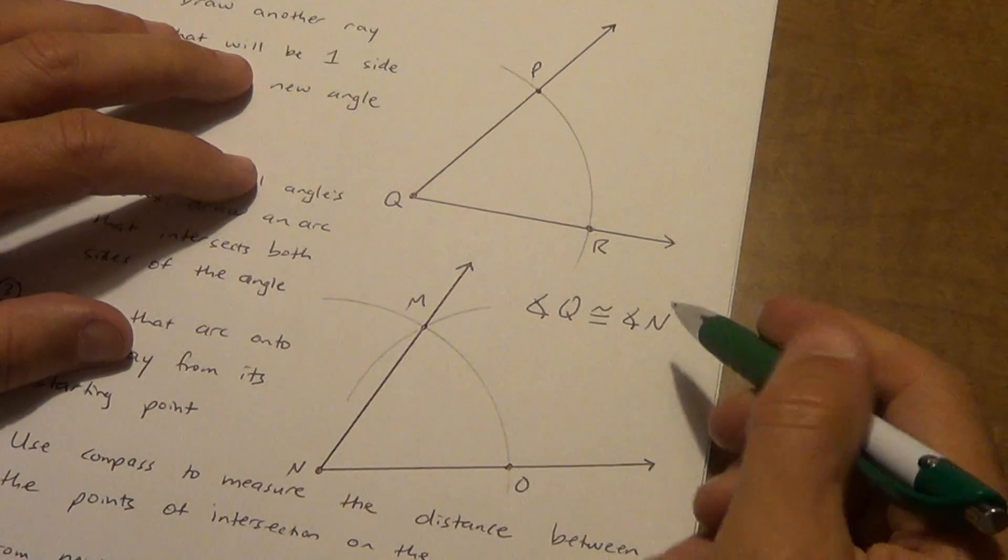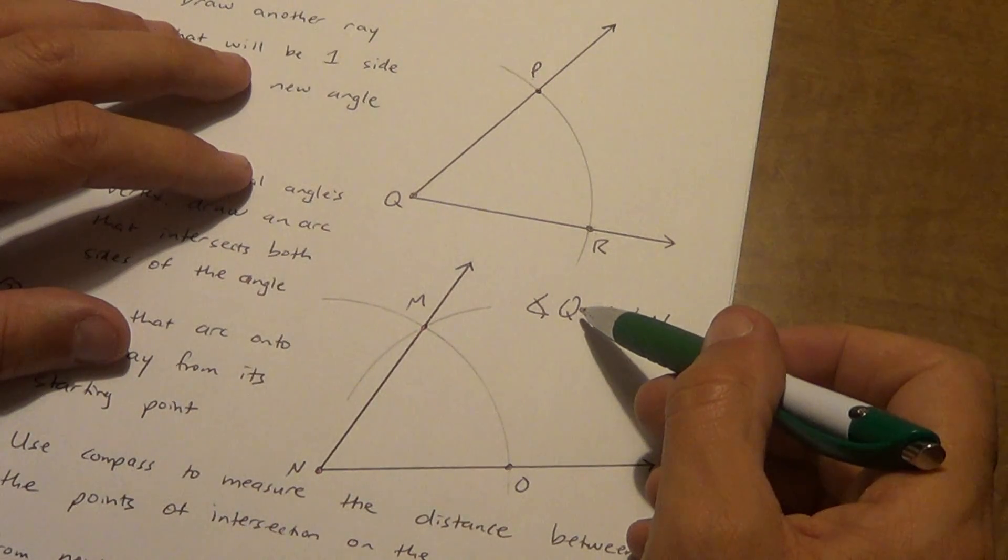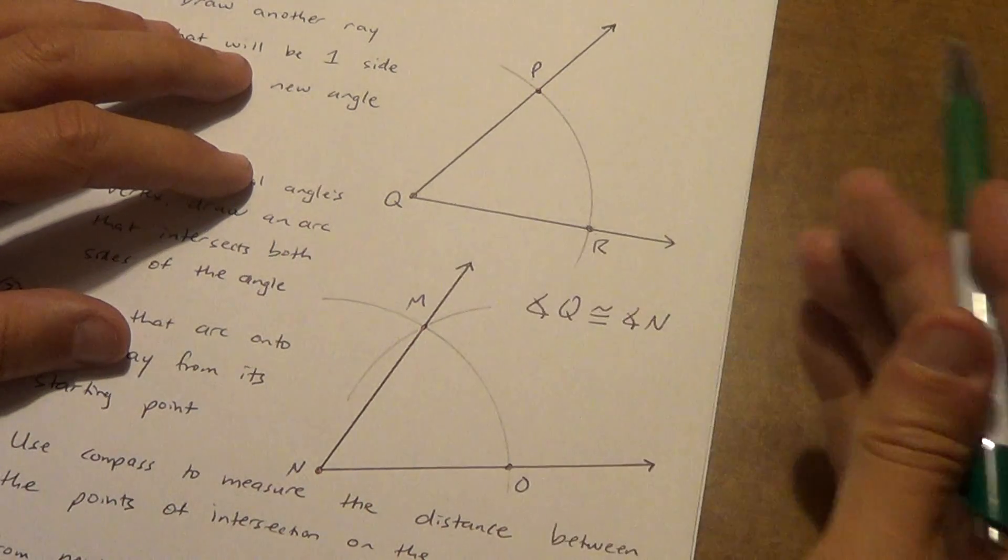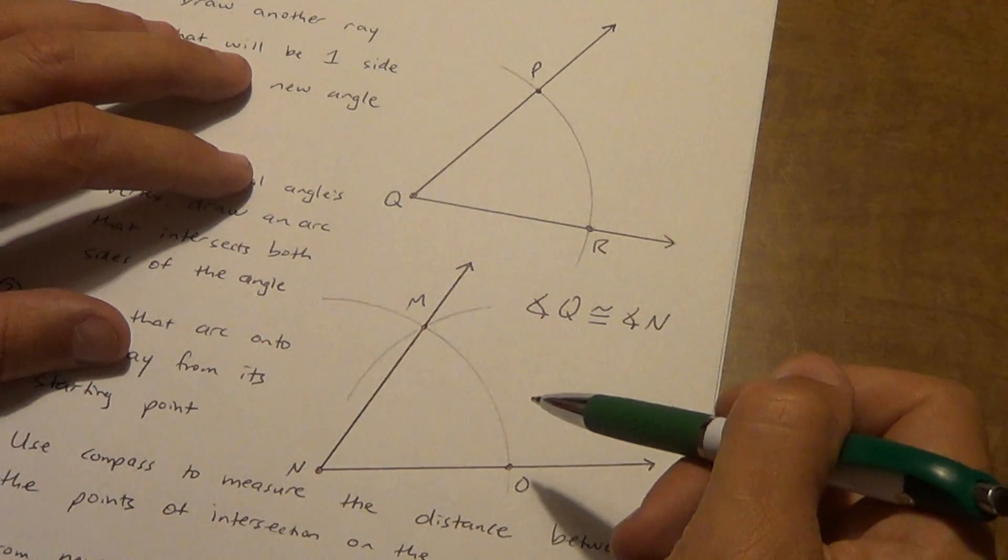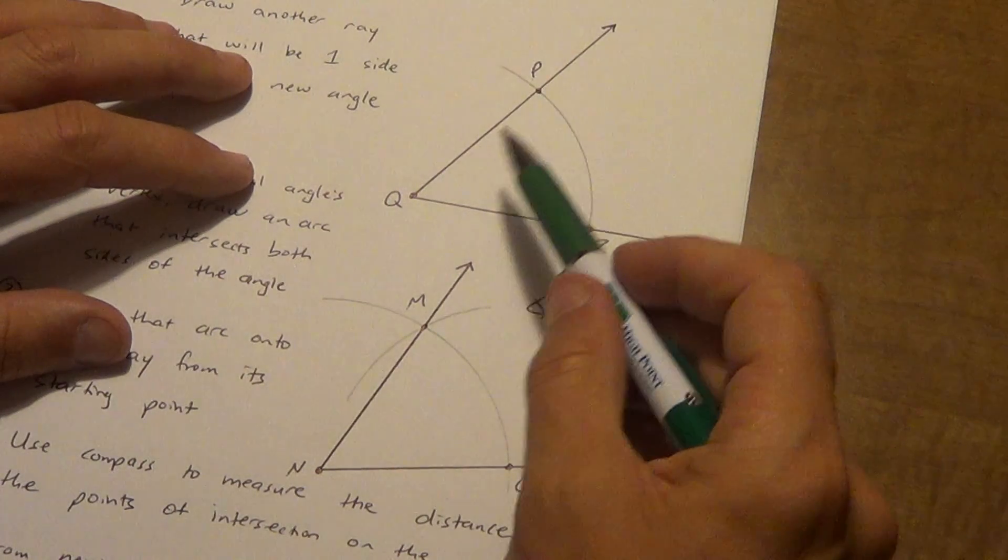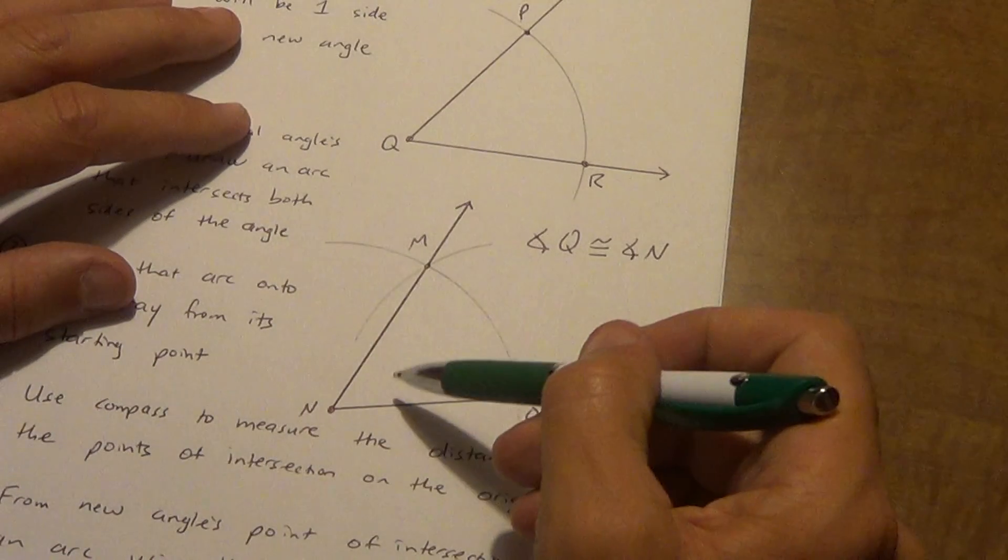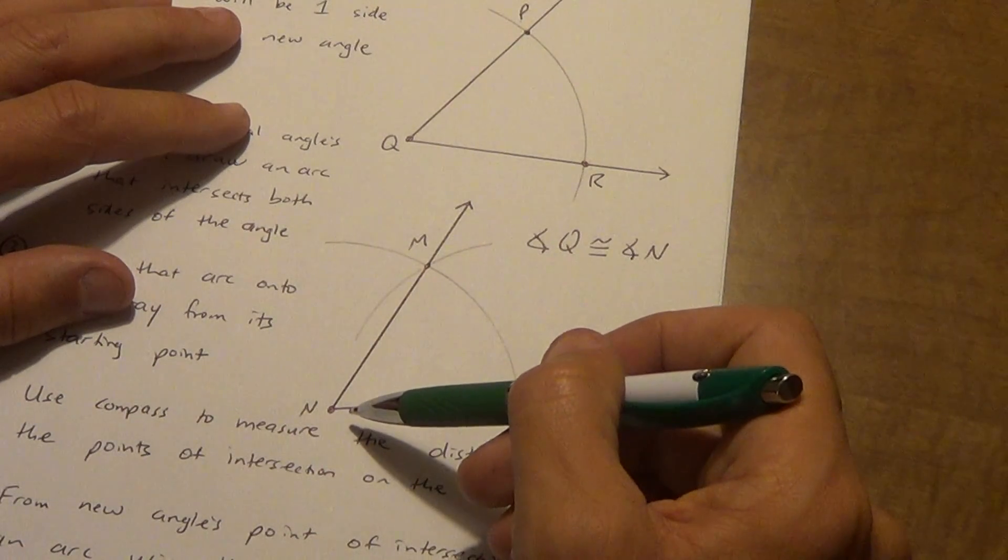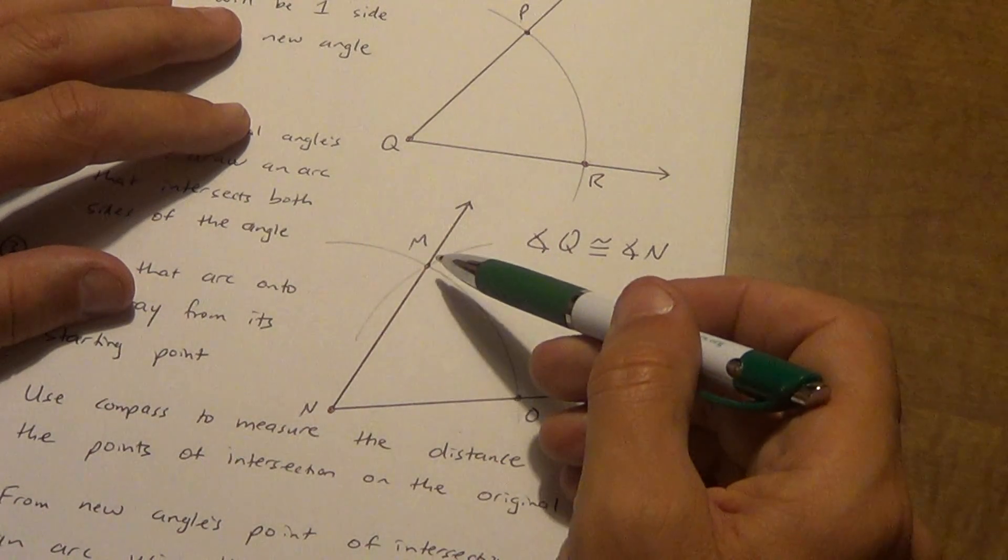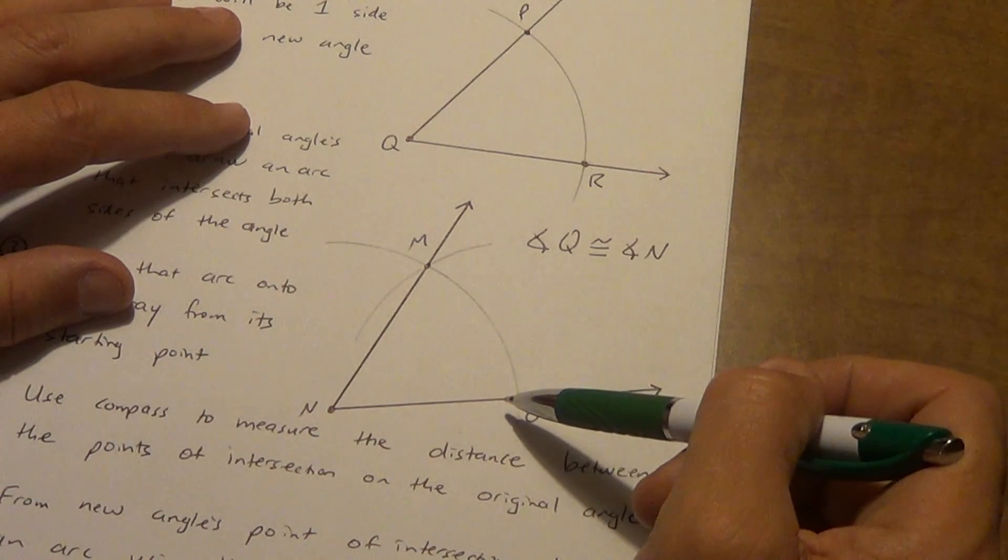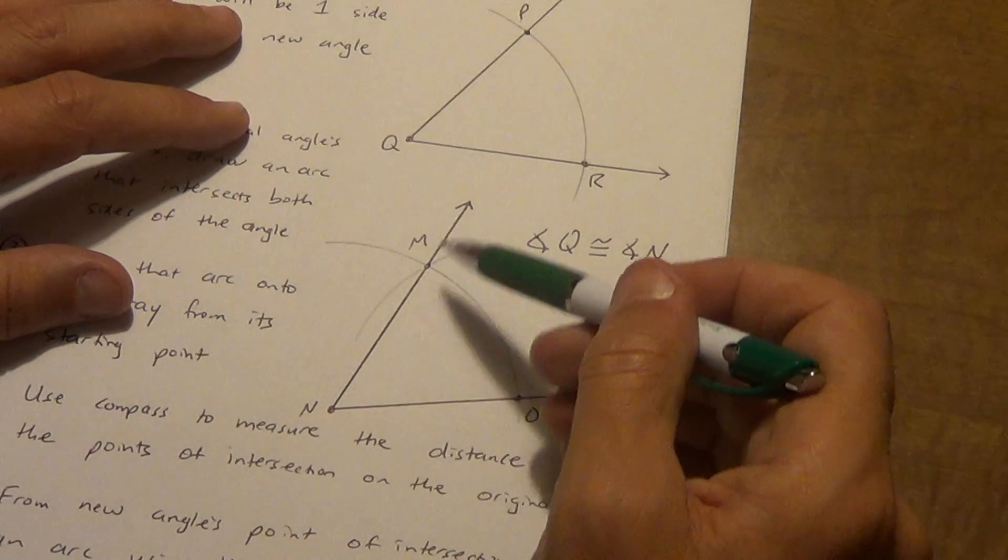Now, why am I allowed to use just one letter here if you remember that? If I say angle Q, it's not confusing. I know exactly which angle it is. If you want to say angle PQR or angle RQP, that's fine. Same thing. If I say angle N, I know exactly which angle it is. But if you want to say angle MNO, that's fine. Or if you want to say angle ONM, that's fine.